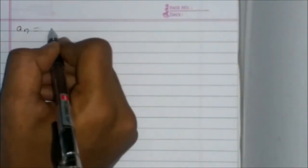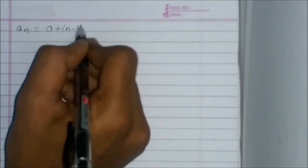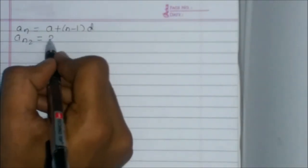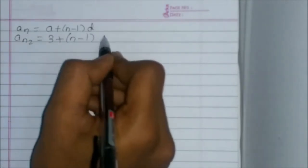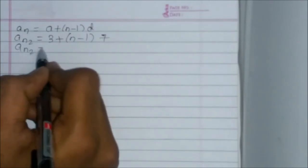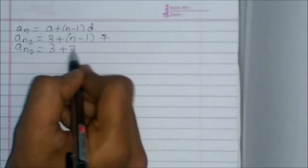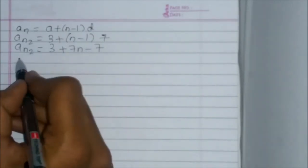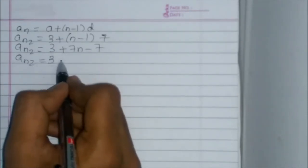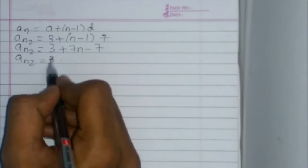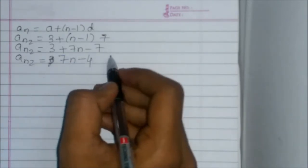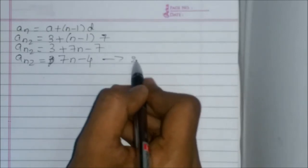An2 is equal to a plus (n-1) times d. An2 is equal to 3 plus (n-1) times 7. An2 is equal to 3 plus 7n minus 7. An2 is equal to 7n minus 4. This is equation 2.